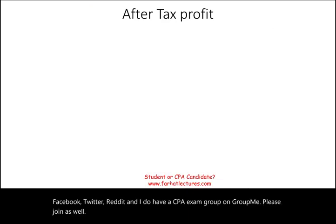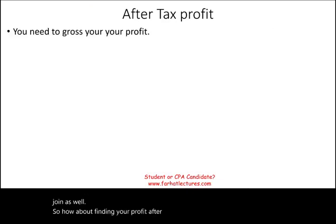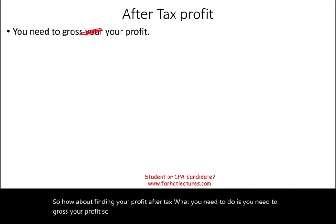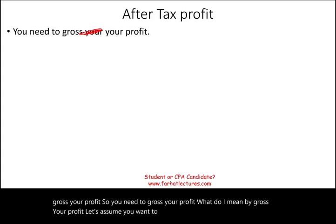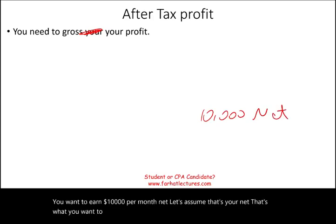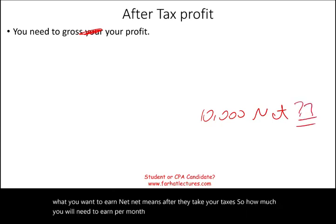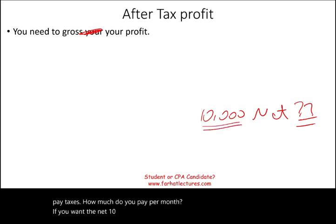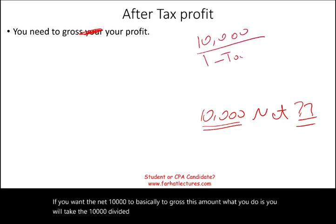To find after-tax profit, you need to gross up your profit. For example, if you want to earn $10,000 per month net after taxes, how much do you need to earn gross? You take the desired net amount and divide it by 1 minus the tax rate.